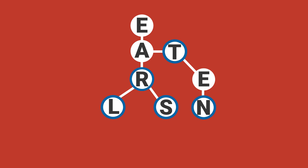Once the trie is filled with the entire dictionary, it can be used to determine if a sequence of letters is a valid word or not. For example, following the nodes in the trie for the word E-A-T-E ends with a node that does not have an identifier, so you know it is not a valid word.